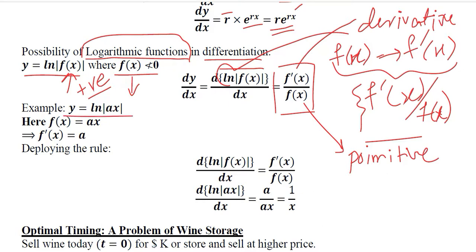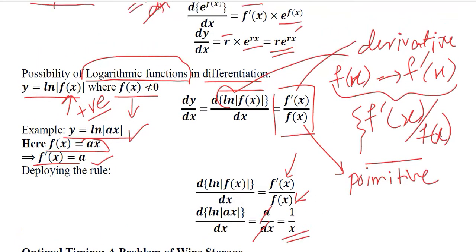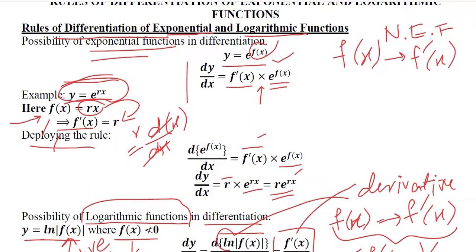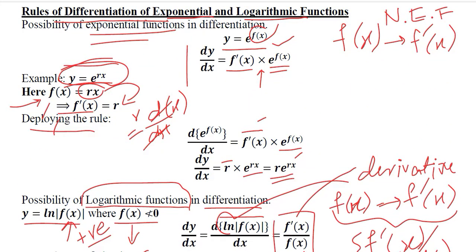Here is an example: the natural log of ax. This is the function and this is its derivative. We take the derivative, that is f-prime(x), and place the original function in the denominator. Simple cancellation gives us the answer for the natural log of ax, which is 1 over x. In this way we can do the differentiation of natural logarithmic as well as natural exponential functions.